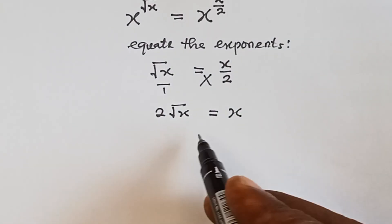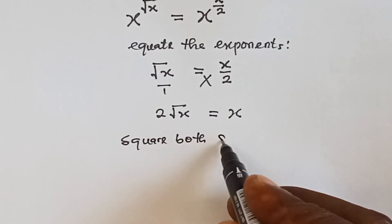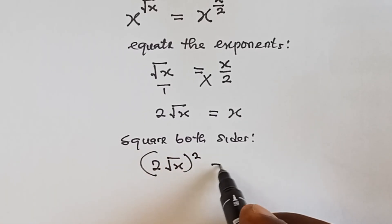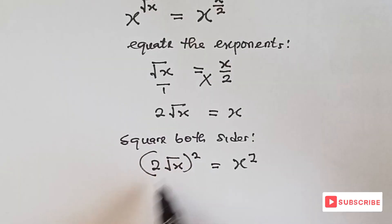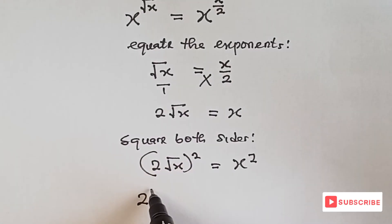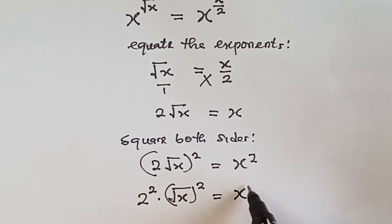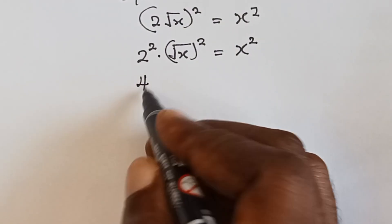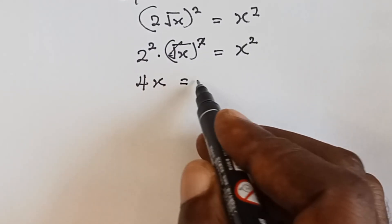Now let's square both sides. We have (2 root x) squared equals x squared. Opening this up, we have 2 raised to the power 2 times root x raised to the power 2, equals x squared. 2 squared is 4, and squaring the square root cancels it, so we have 4x equals x squared.